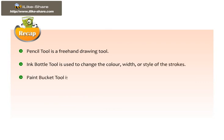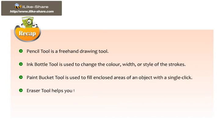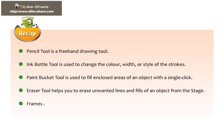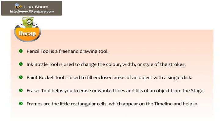Paint Bucket Tool is used to fill and close areas of an object with a single click. Eraser Tool helps you to erase unwanted lines and fills of an object from the stage. Frames are the little rectangular cells which appear on the timeline and help in creating animation in Flash.